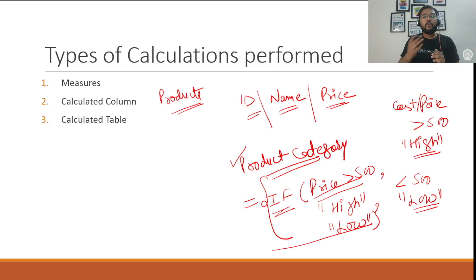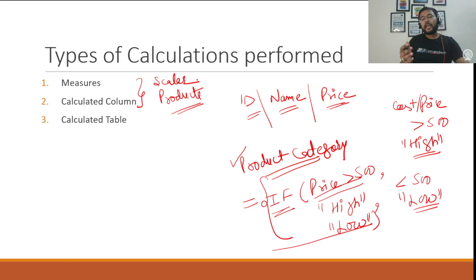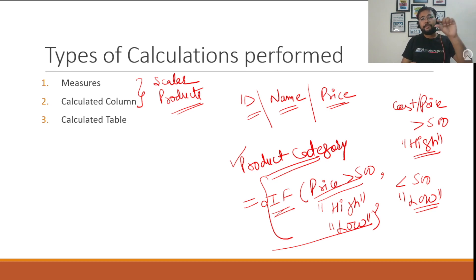The third type of calculation is a calculated table. A calculated table is very different from the first and second types. A measure and a calculated column return a scalar output, whereas a calculated table returns a table as the output. That is the major difference between the first two types of calculations and the calculated table.